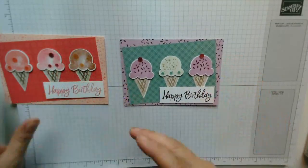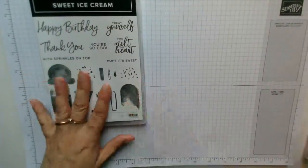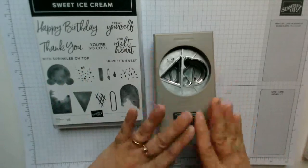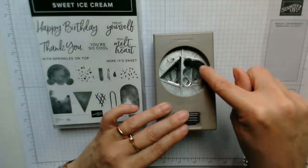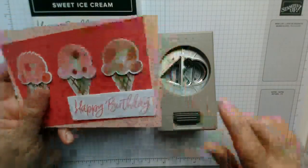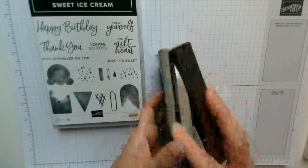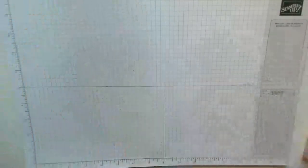Okay so that is the two cards and as I said the stamp set we are going to be using is the sweet ice cream stamp set with the matching punch. It basically cuts out the fat part of the ice cream and then you've got this section here which cuts out the cone.